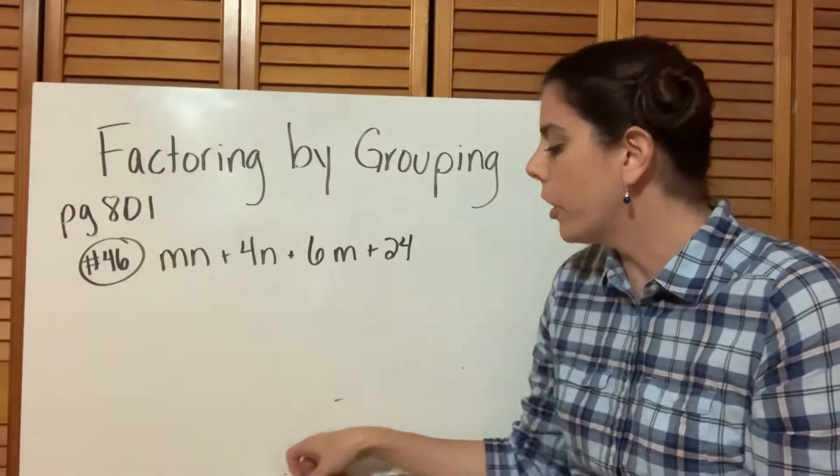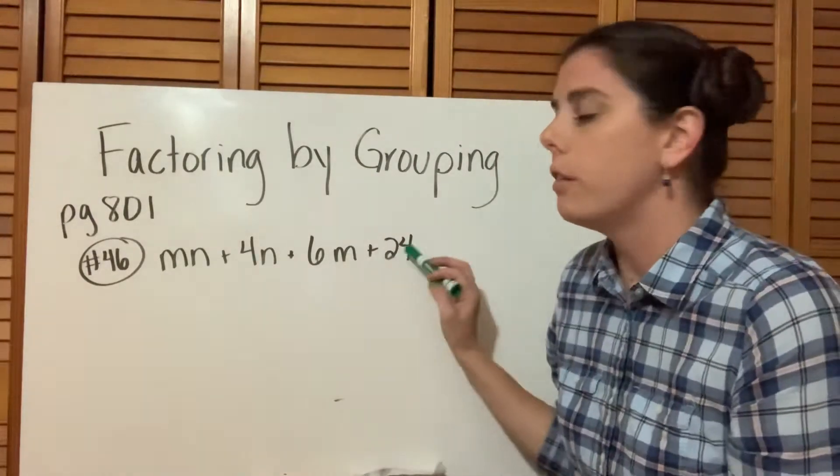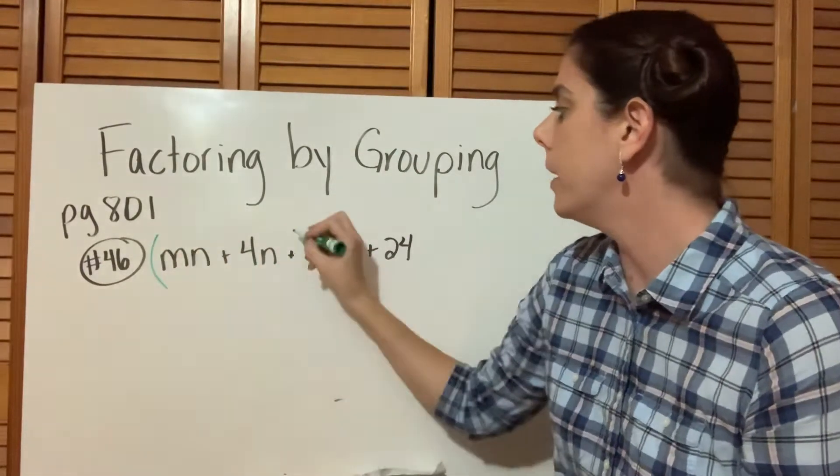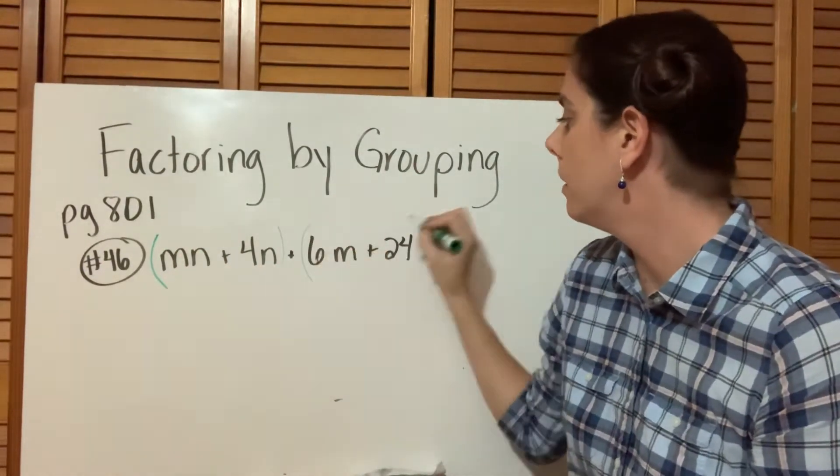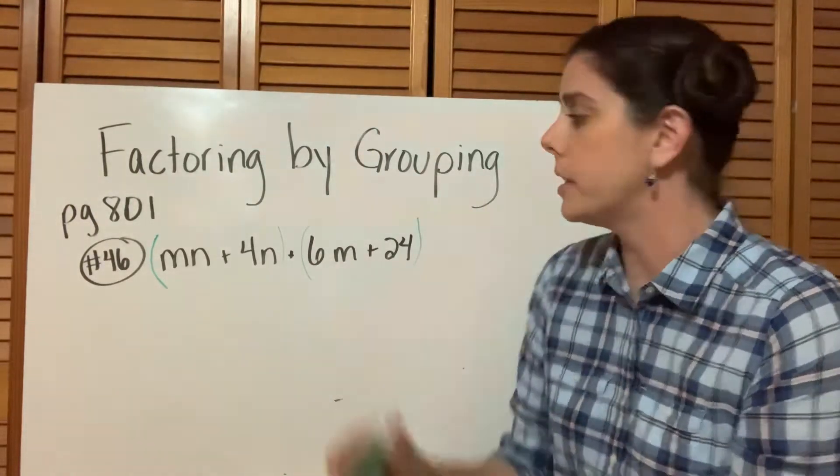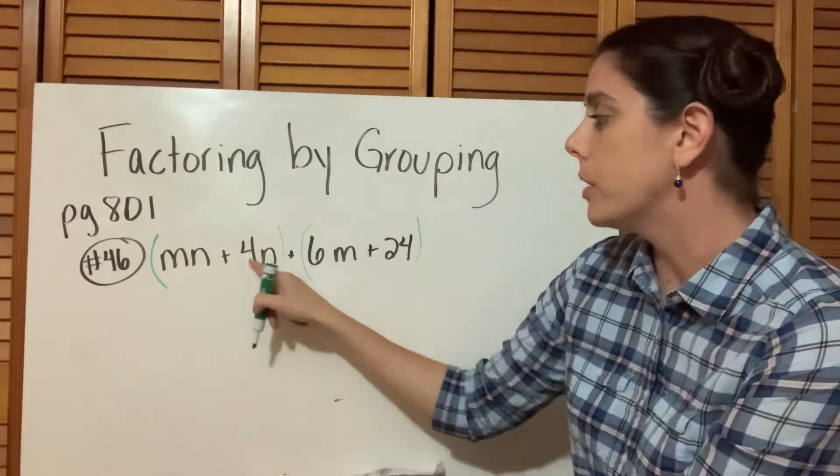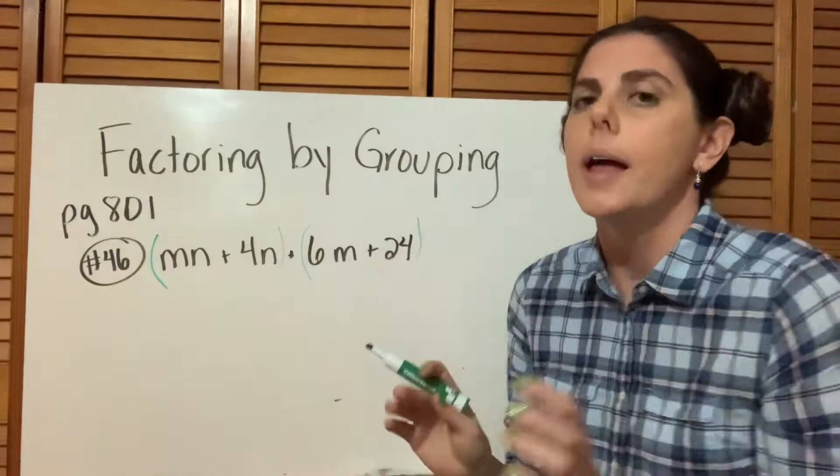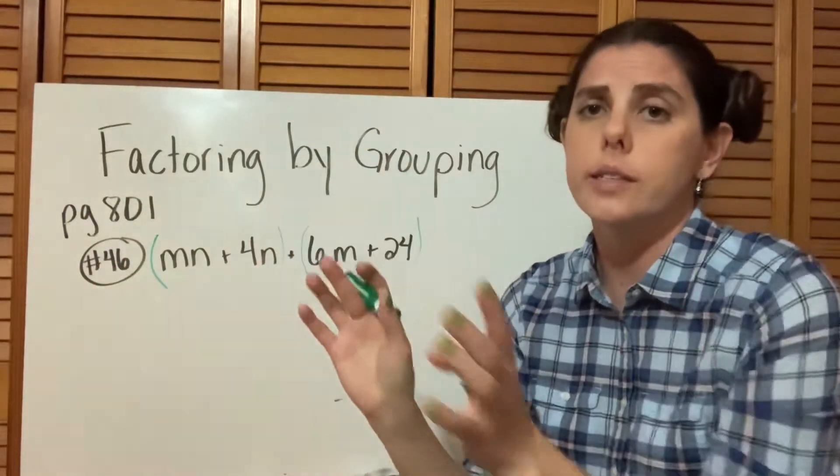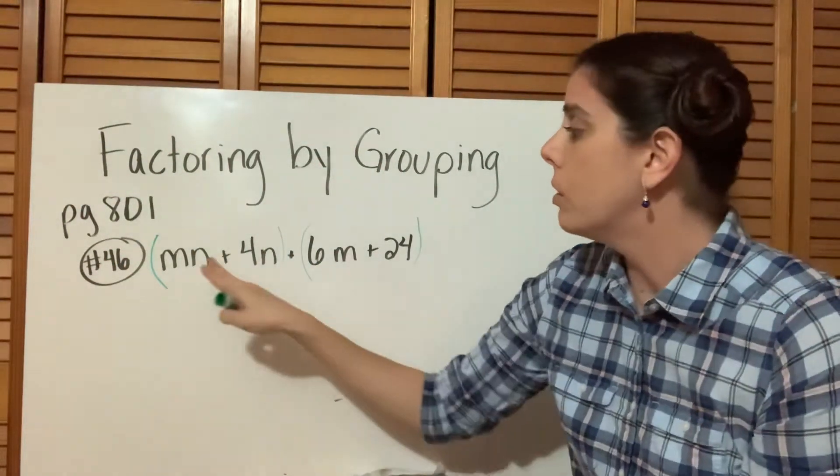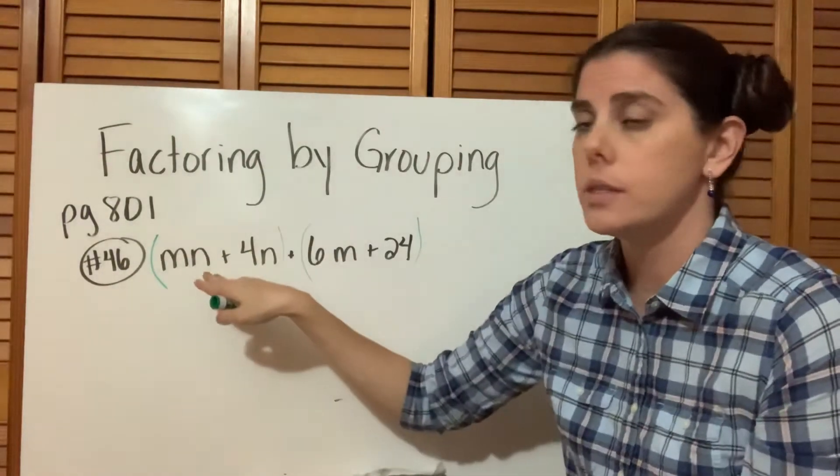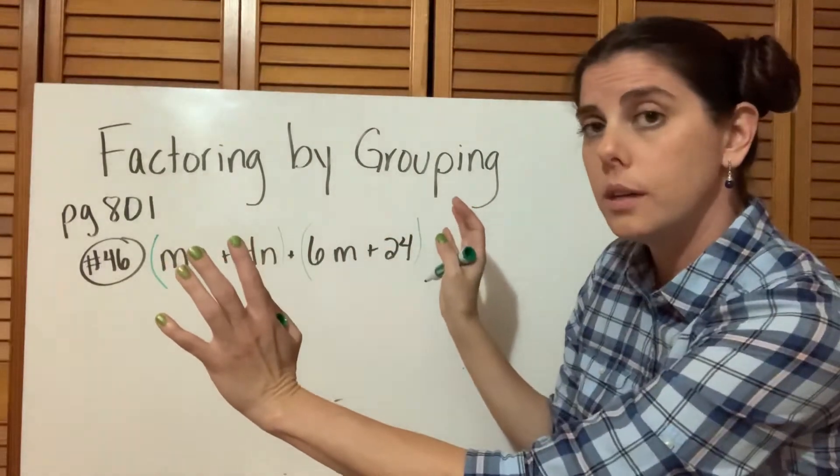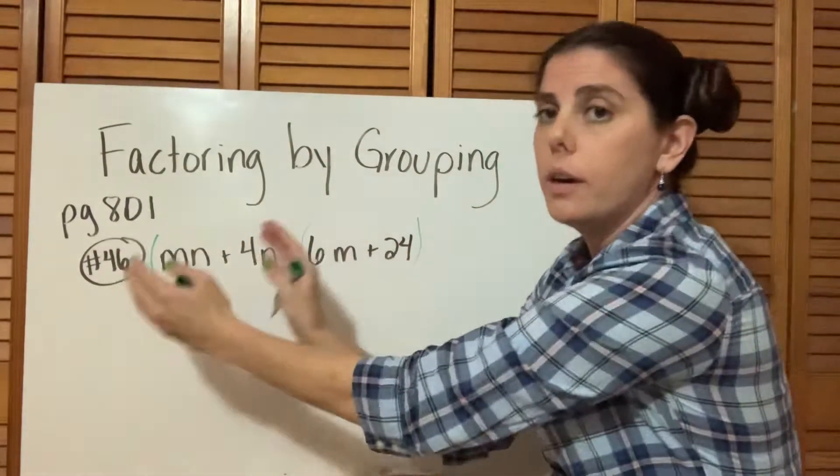The first thing we're going to do is group the terms together. You can group the first two terms together—MN plus 4N—and then the 6M plus 24 together. They're two separate groups. Basically, you're going to turn these into two mini problems. You're separating the four terms and factoring the first part and then the second part.